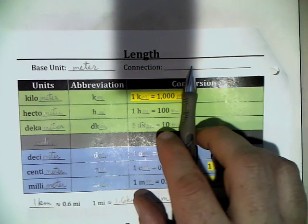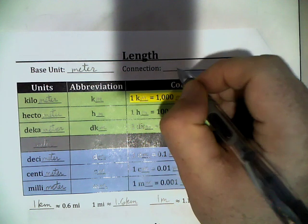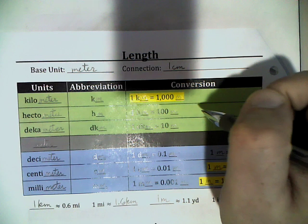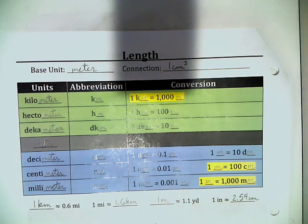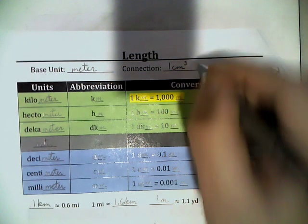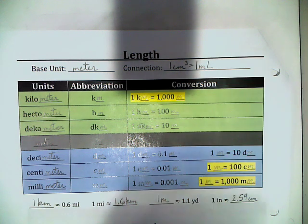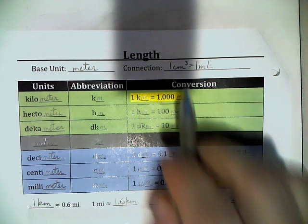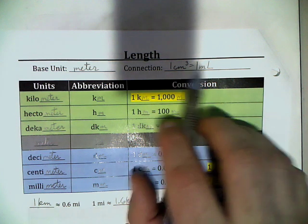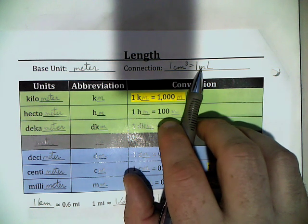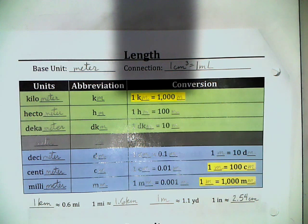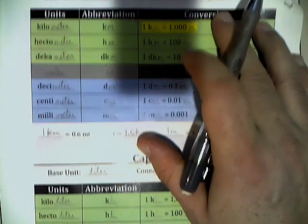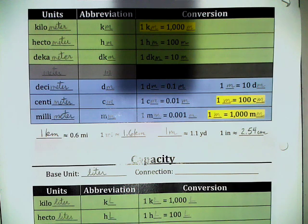Now we'll travel back up to length for that connection. The connection between length and capacity is that if we take one centimeter and make a cube out of it — one centimeter by one centimeter by one centimeter — this cube will have a one milliliter capacity. So one cubic centimeter equals one milliliter. That's a nice one-to-one: if you have 83 cubic centimeters, you instantly know that's 83 milliliters.